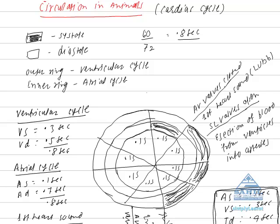In this chapter, which is circulation in animals, the most important aspect is the cardiac cycle. The cardiac cycle is the sequence of events that occurs during one heartbeat. The duration of the cycle is 0.8 seconds, meaning in every 0.8 seconds the cycle is repeated.